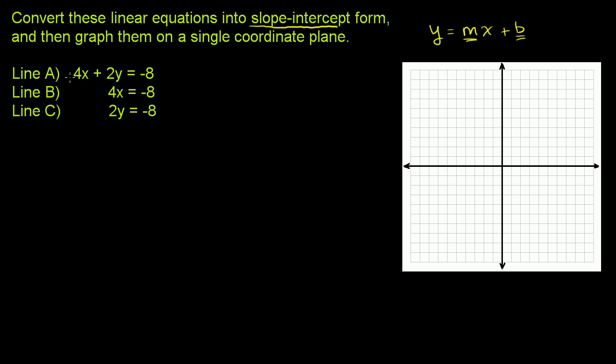We just have to algebraically manipulate these equations into this form. Let's start with line A. Line A is in standard form right now: 4x plus 2y equals negative 8. The first thing I'd like to do is get rid of this 4x from the left-hand side, and the best way to do that is to subtract 4x from both sides of this equation. So let me subtract 4x from both sides.